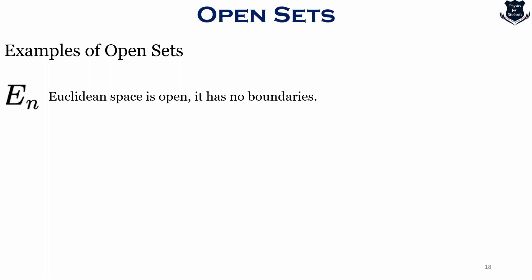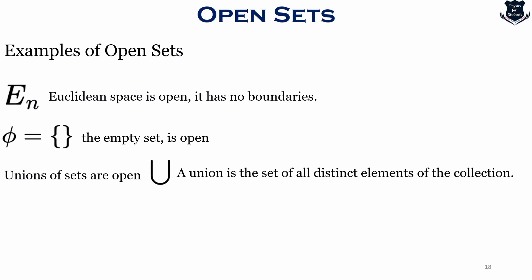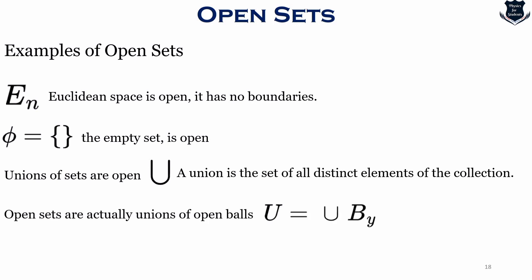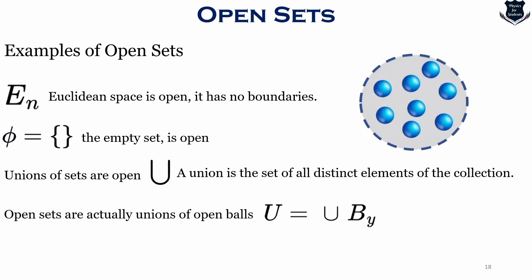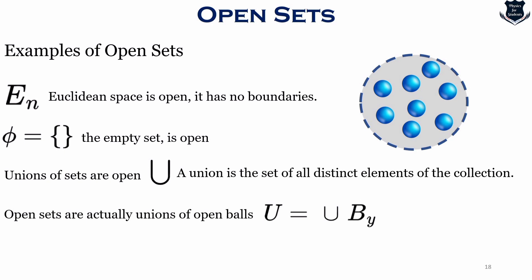Some quick examples of open sets: Eⁿ is open since Euclidean real space has no boundaries; the empty set is open; the union of open sets is open — union is denoted by the big cup symbol and is the set of all distinct elements of the collection. Furthermore, open sets are actually unions of open balls, which we will now cover.